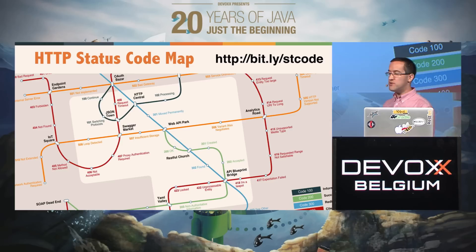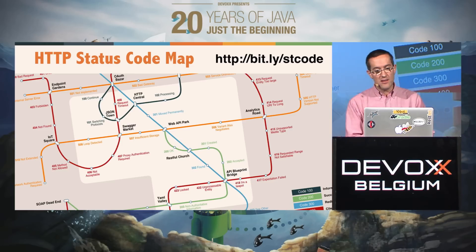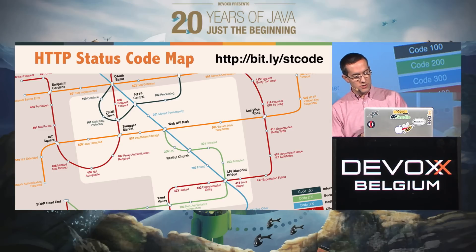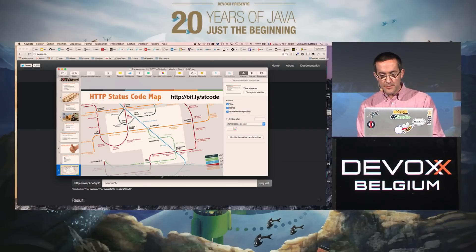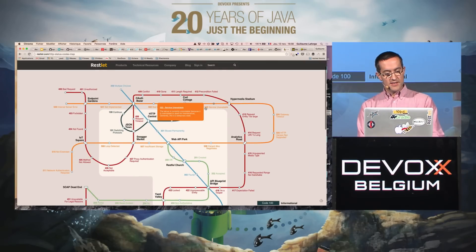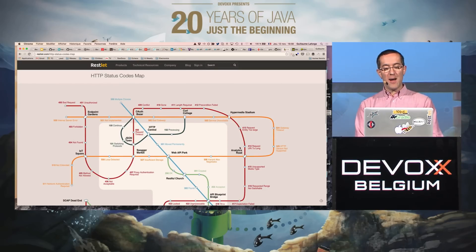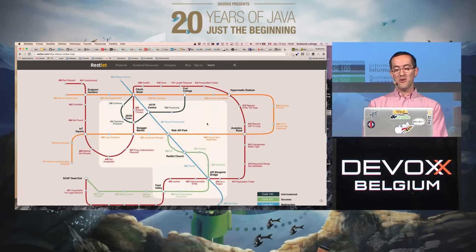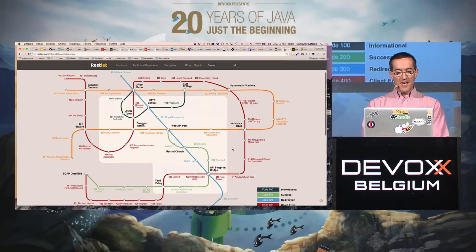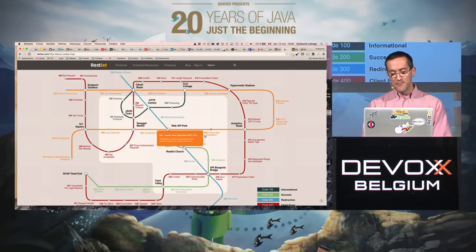A little focus now on HTTP status codes. You can look at a short URL — bit.ly/stcode — like 'status code.' With some colleagues, we made a little subway map of HTTP status codes. Each family of status codes is a metro subway line, with some funny crossing stations like 'HTTP Central,' 'OAuth Bazaar,' etc. When you hover over status codes you can see what they're about, and you can click to get the explanation of each status code.